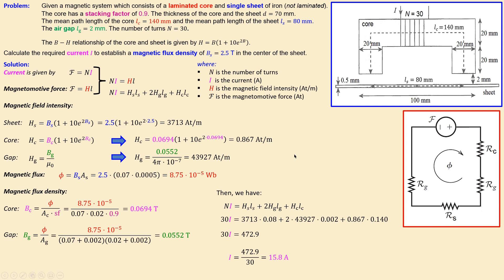This procedure differs from example two because we have no information about the relative permeability of the core. Trying to use the reluctance-based phi formula fails since the core relative permeability is unknown. The B-H curve approach used here is the correct method given the available information. Example four will be a more practical problem where we also lift the sheet up — stay tuned.